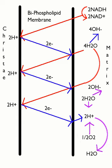Chemiosmosis is the movement of ions across a semi-permeable membrane, down their electrochemical gradient. An example of this would be the generation of adenosine triphosphate by the movement of hydrogen ions across a membrane during cellular respiration or photosynthesis.